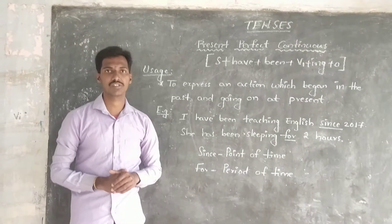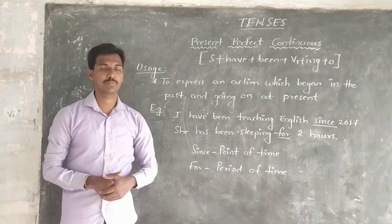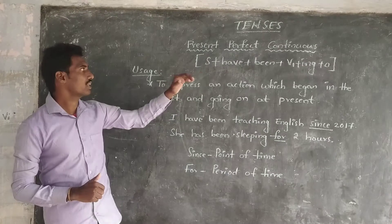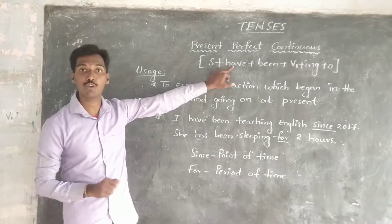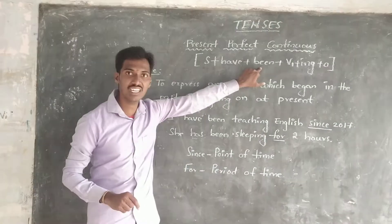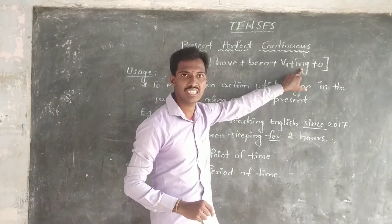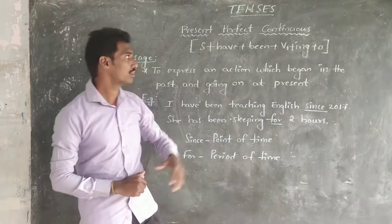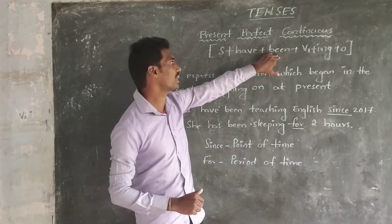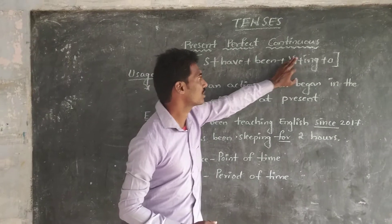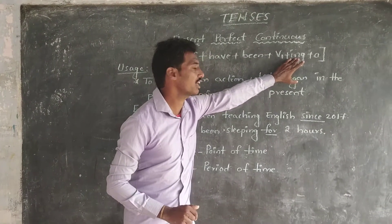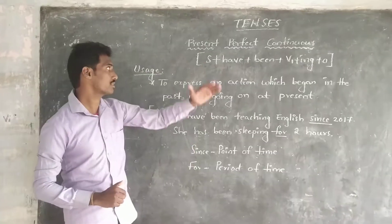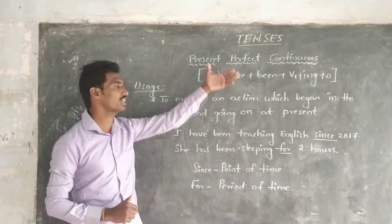The principle for Present Perfect Continuous is: Subject + have form + been + V1 + ing + object. You add -ing to V1 because of the continuous aspect. This is the principle of Present Perfect Continuous.